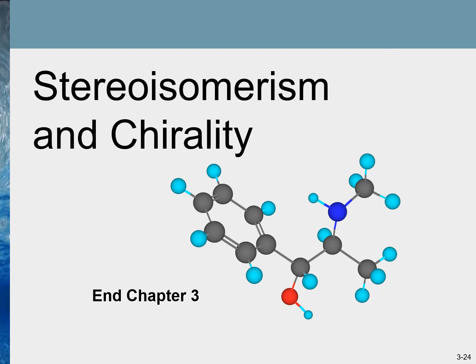With that we conclude this chapter. We learned about stereoisomerism and chirality — what chirality is, what enantiomers and diastereomers are, how to identify them, what R and S enantiomers are, and Fischer projection formulas, which are a great way to express the structures of carbohydrates. We also discussed optical activity, optical purity, enantiomeric excess, and methods to separate enantiomeric mixtures. Thank you for watching this video.